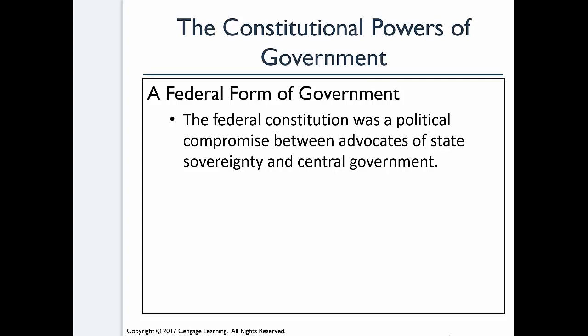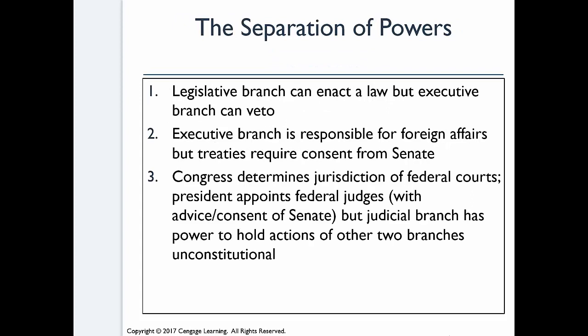We have a federal form of government made up of three branches: the legislative branch, the executive branch, and the judicial branch. Each branch is in charge of holding the other two accountable. The legislative branch can enact a law, but the executive branch can veto it. The executive branch handles foreign affairs, but treaties require consent from the Senate. Congress determines the jurisdiction of federal courts. The president appoints federal judges with the advice and consent of the Senate, but the judicial branch can hold the other two branches' actions unconstitutional.